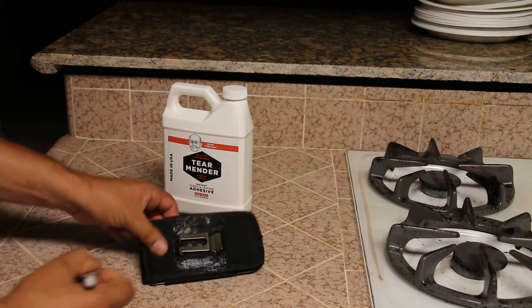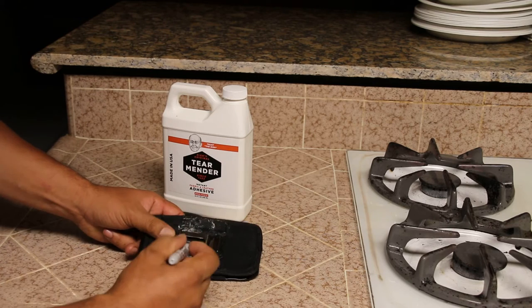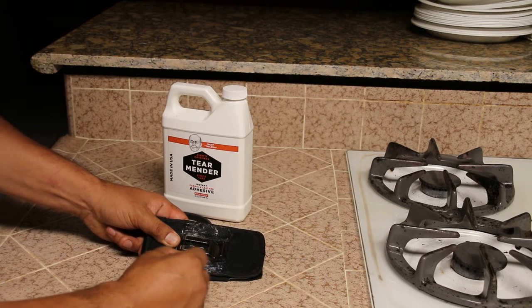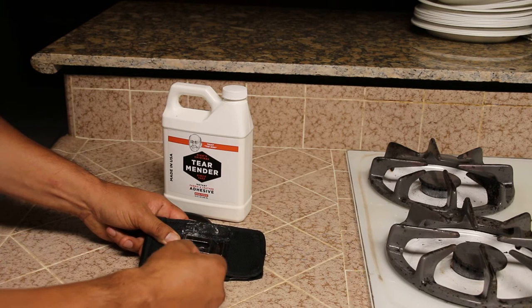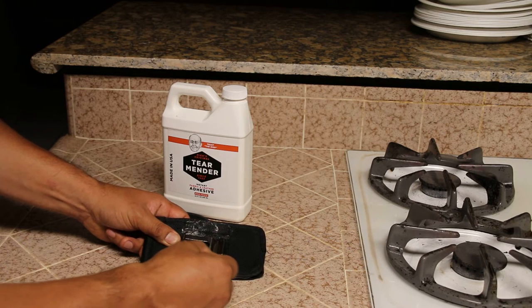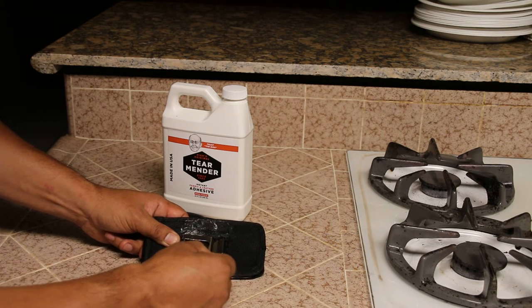Okay, so after repairing this with Terramander, if you see that it looks like that and you want to make it look better, just grab a sharpie or something like a permanent marker and just cover the color of the glue.